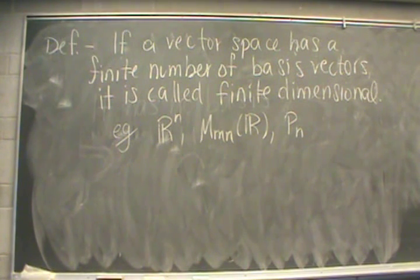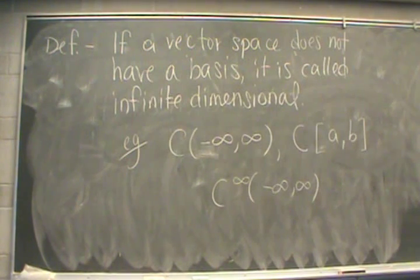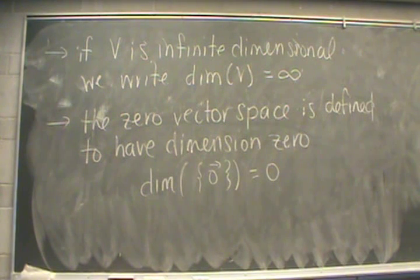So it's because of this problem that we just obtained that we end up with these following two definitions. If we try to find a basis for our vector space and we notice that there are a finite number of vectors in our basis, then we call the vector space finite dimensional. If we are unable to find a basis for a vector space, it's called infinite dimensional. Finally, here are a couple more notes regarding dimension. If V happens to be infinite dimensional, then we usually write dim(V) is equal to infinity. Also, in case it does come up, the zero vector space is defined to have dimension zero.